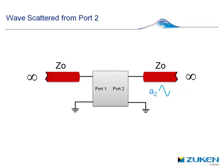So A2 arrives at port 2, is scattered to port 1 as B1, and reflected from port 2, again scattered, as B2.